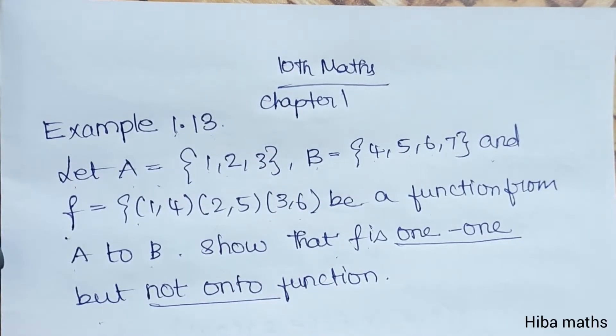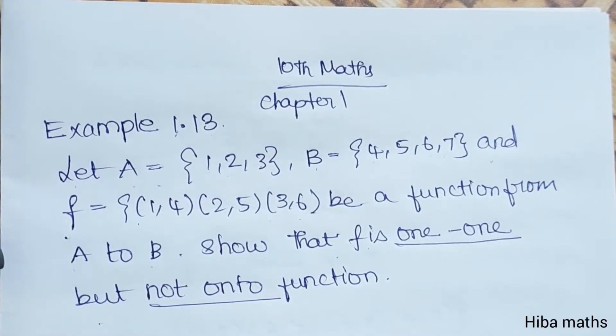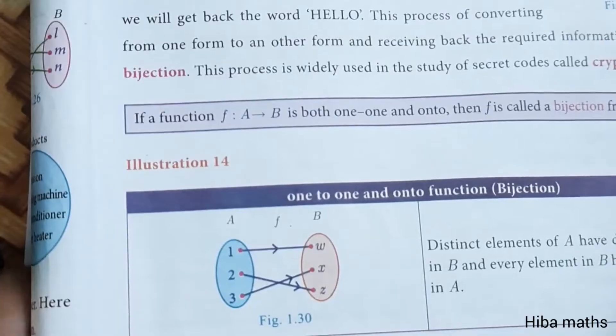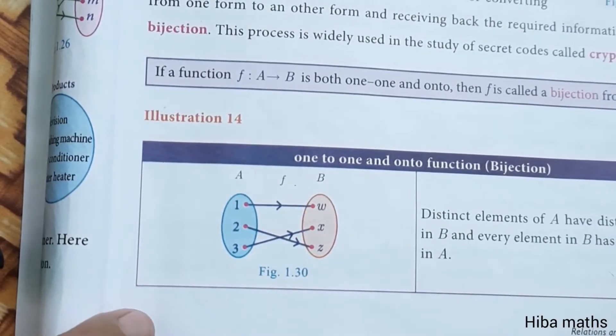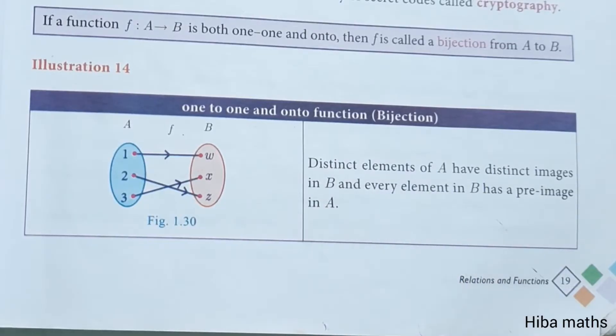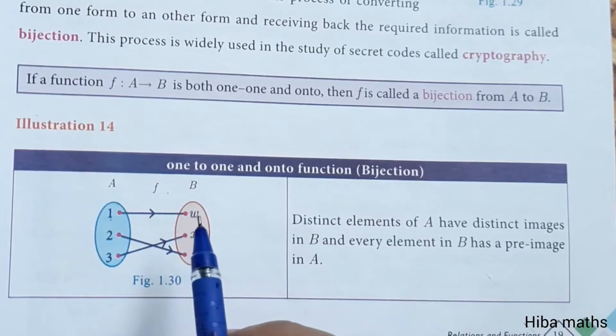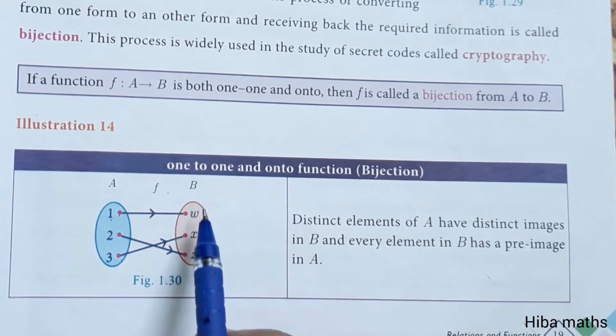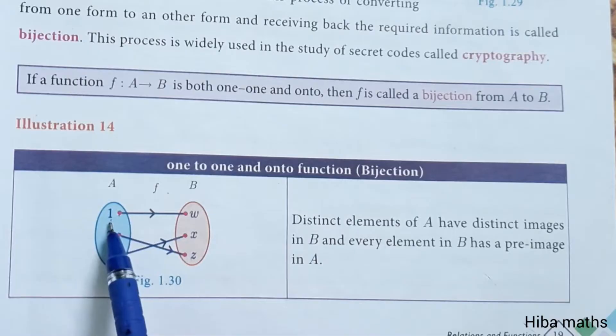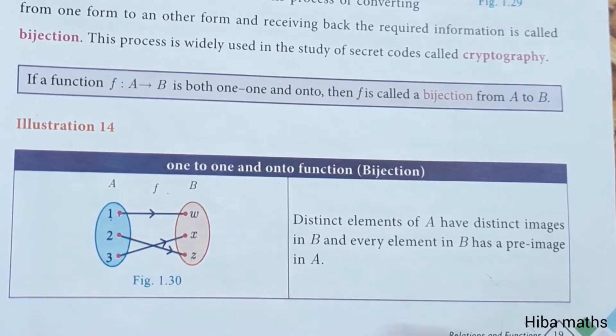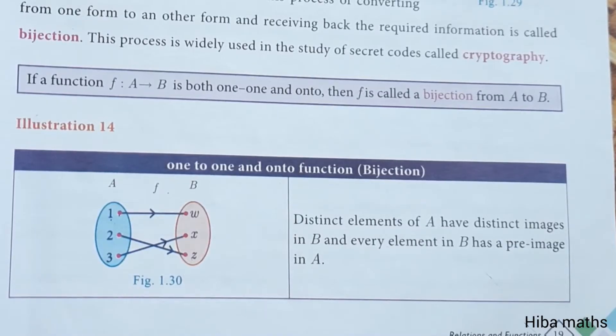One-to-one and onto function, that is bijection. If all answers are unique then it is one-to-one. If all elements in B have pre-images then it is onto.